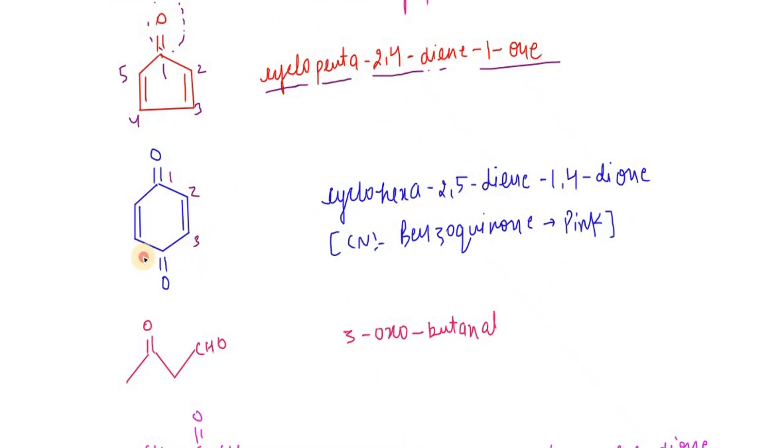Numbering one through six: cyclohexa-2,5-diene-1,4-dione. The common name is benzoquinone. This is a pink color solution, also known as benzoquinone.